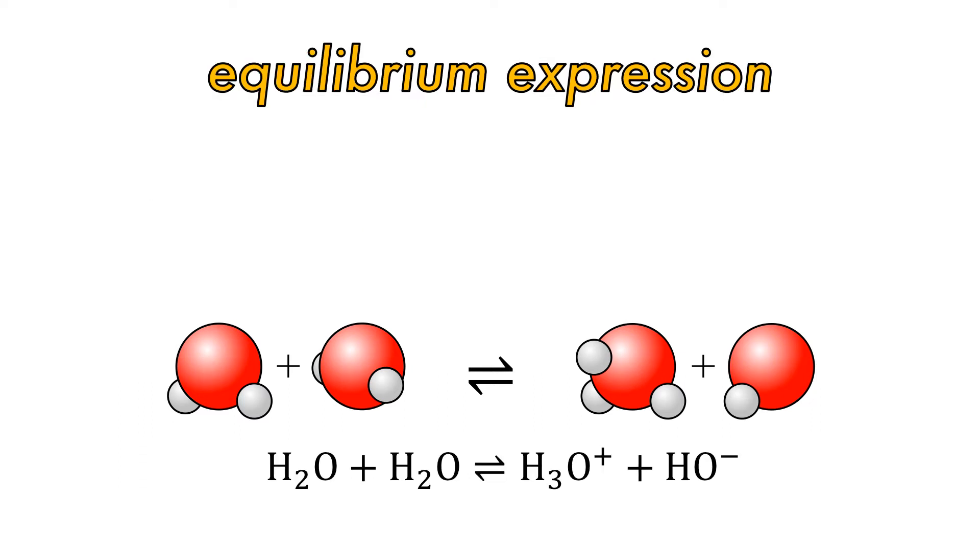Since this is a reaction, we can write an equilibrium constant. As usual, we write products over reactants, but in this case, we only need to write products as the concentration of water is very high. At 25 degrees Celsius, the ionized fraction is very small, but as temperature increases, so too does this ionized fraction.